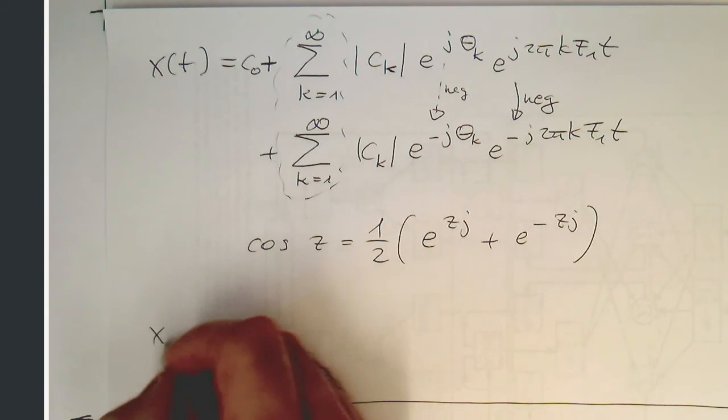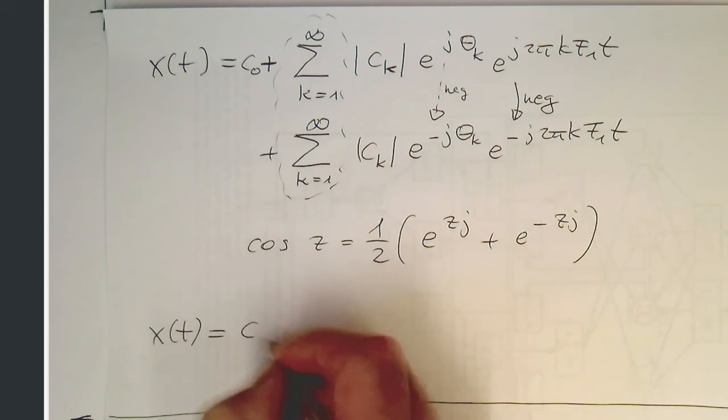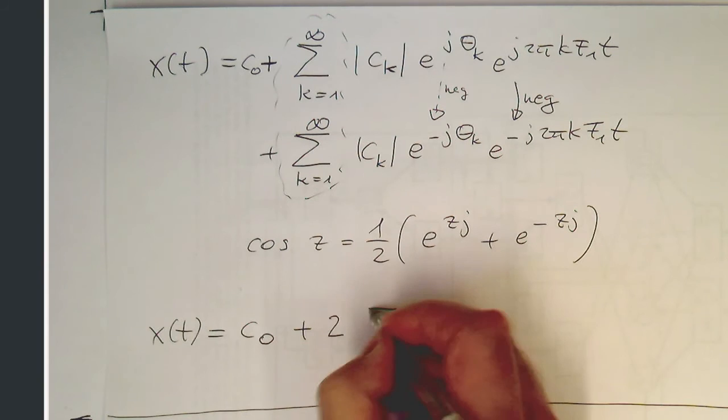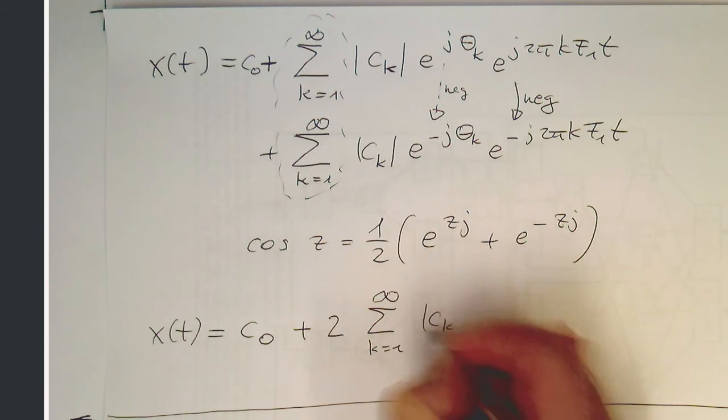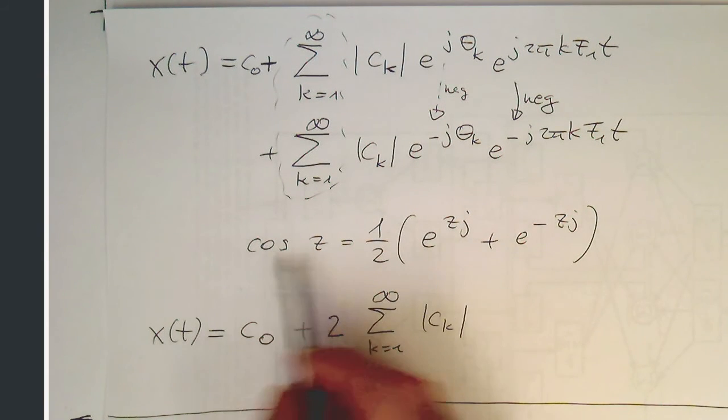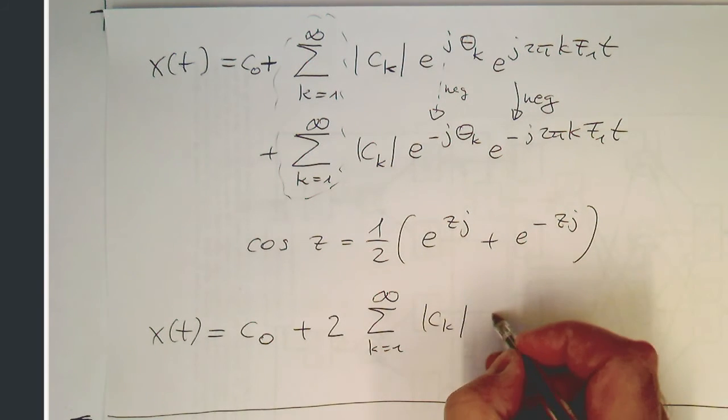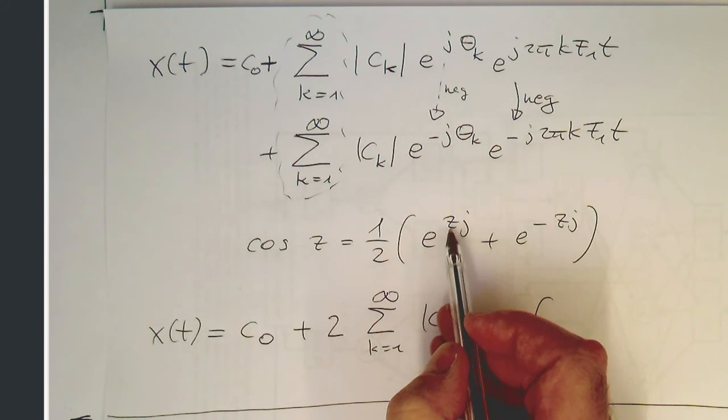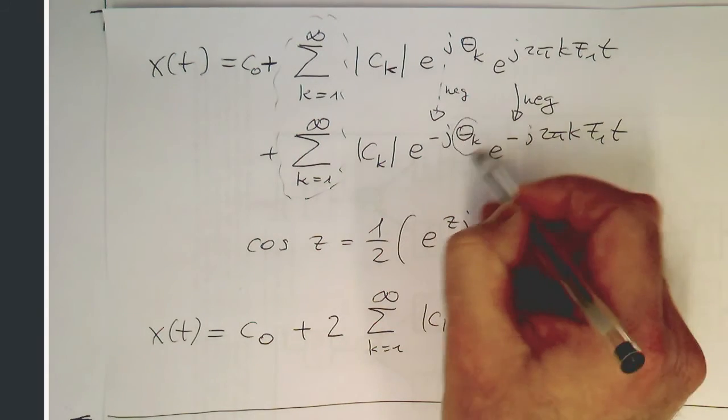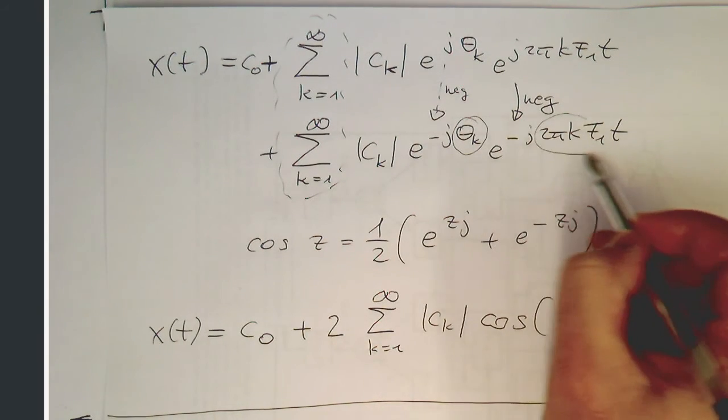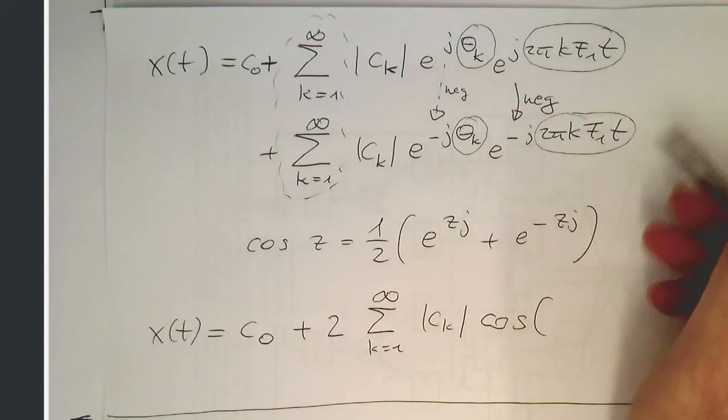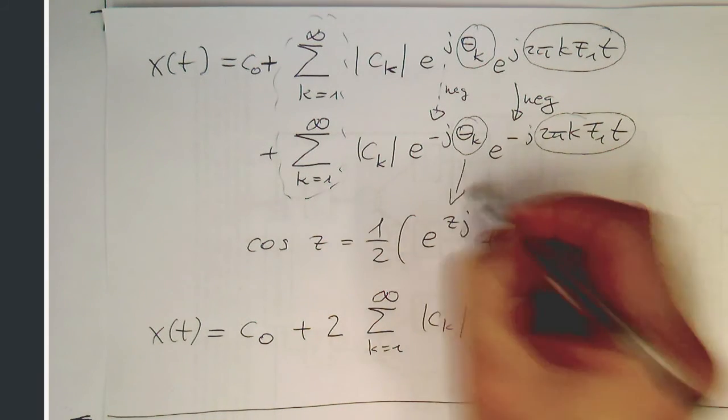So we can rewrite this x(t) as c0, then 2, and k equals 1 to infinity, |ck|, and now we've got the cosine. Cosine z, and the z is obviously this here, and this bit here, and this one here, so this comprises our z.